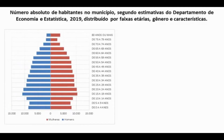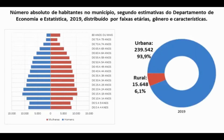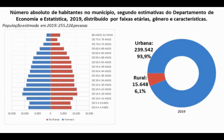Observamos a pirâmide etária de Viamão, mostrando que a maior concentração de pessoas está na faixa entre 15 e 24 anos, mas com uma tendência de envelhecimento da população verificada em anos anteriores, especialmente da população feminina. Quanto à distribuição entre zona urbana e zona rural, em 2019, 93,9% da população estava na região urbana e 6,1% na região rural. A população estimada pela FEA para 2019 é de 255.224 pessoas.